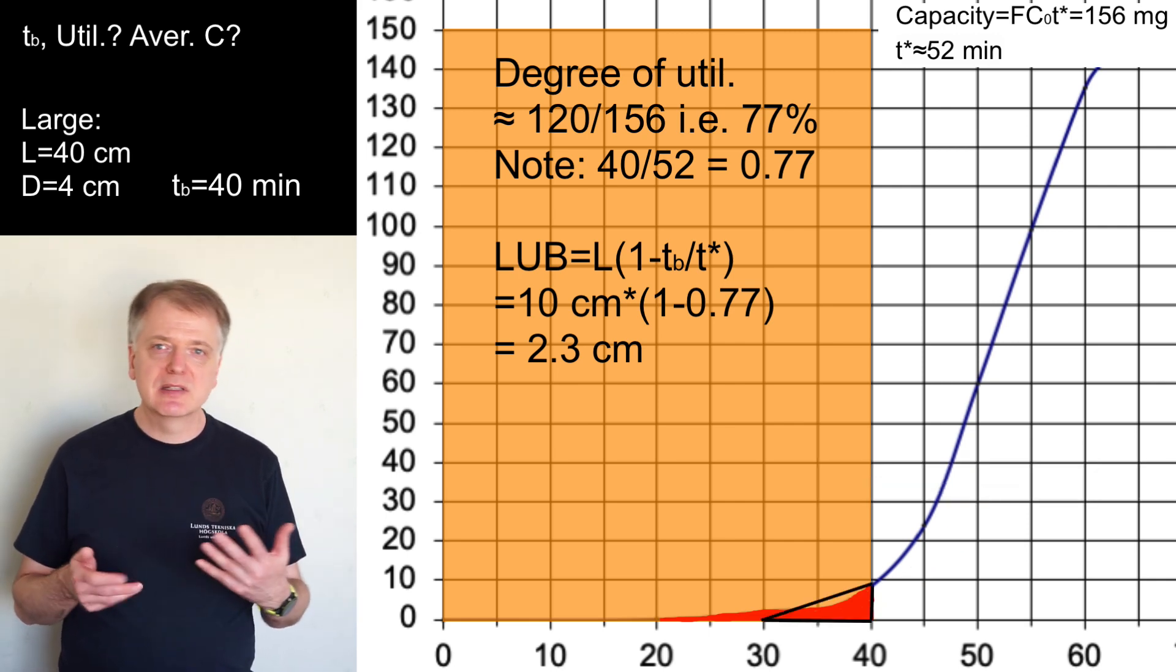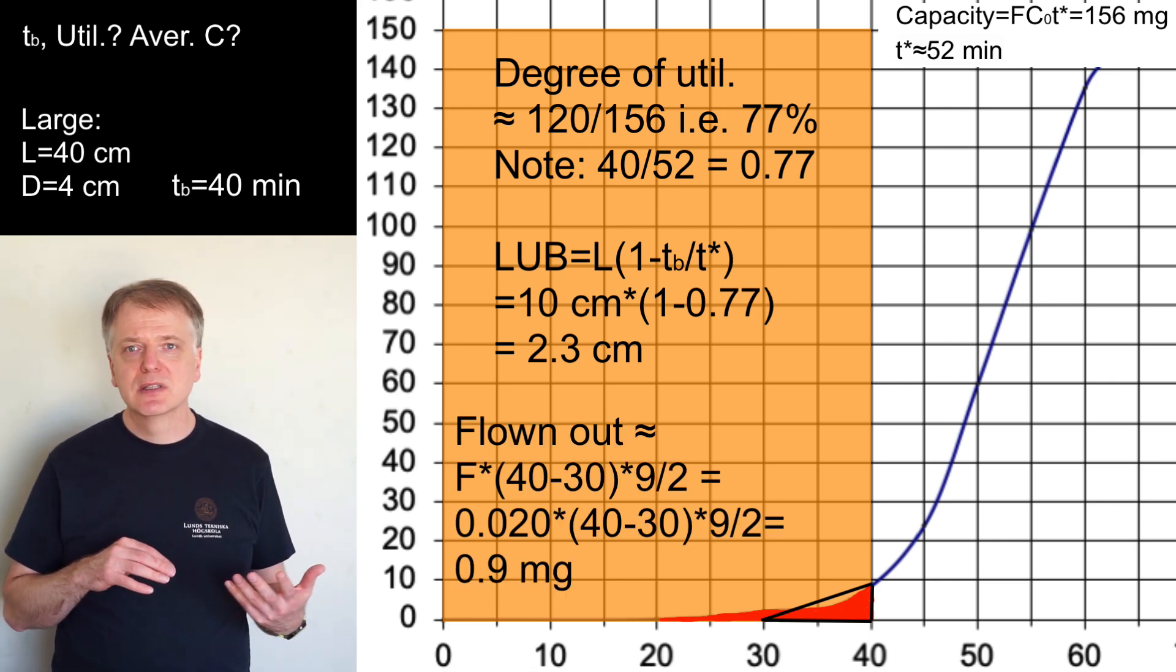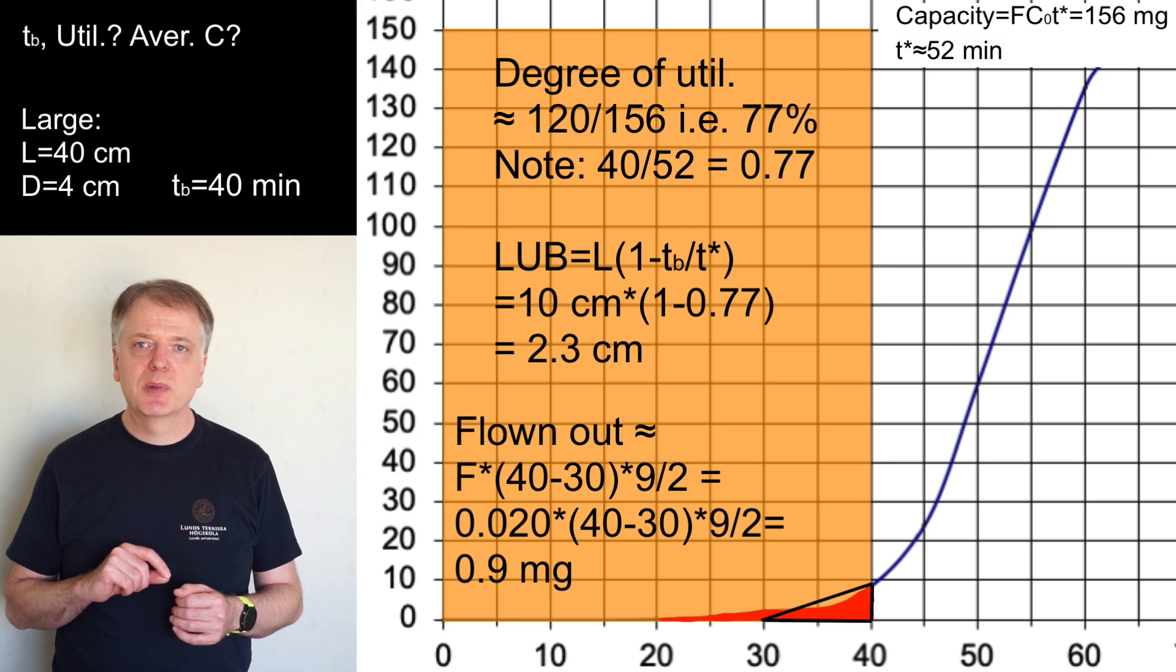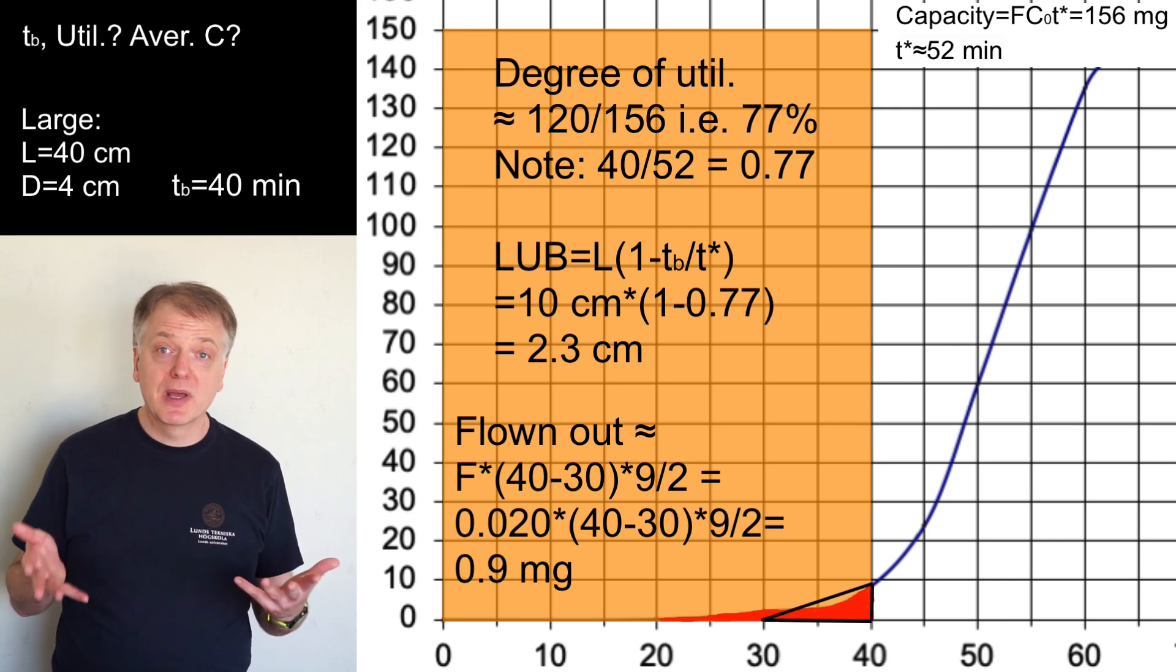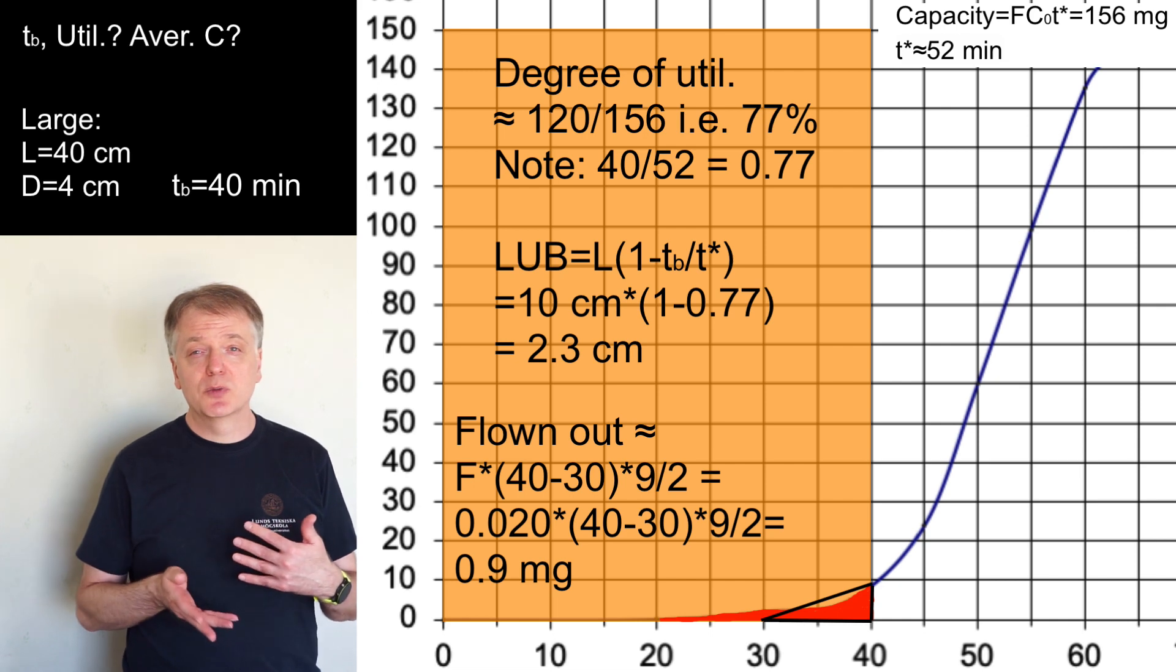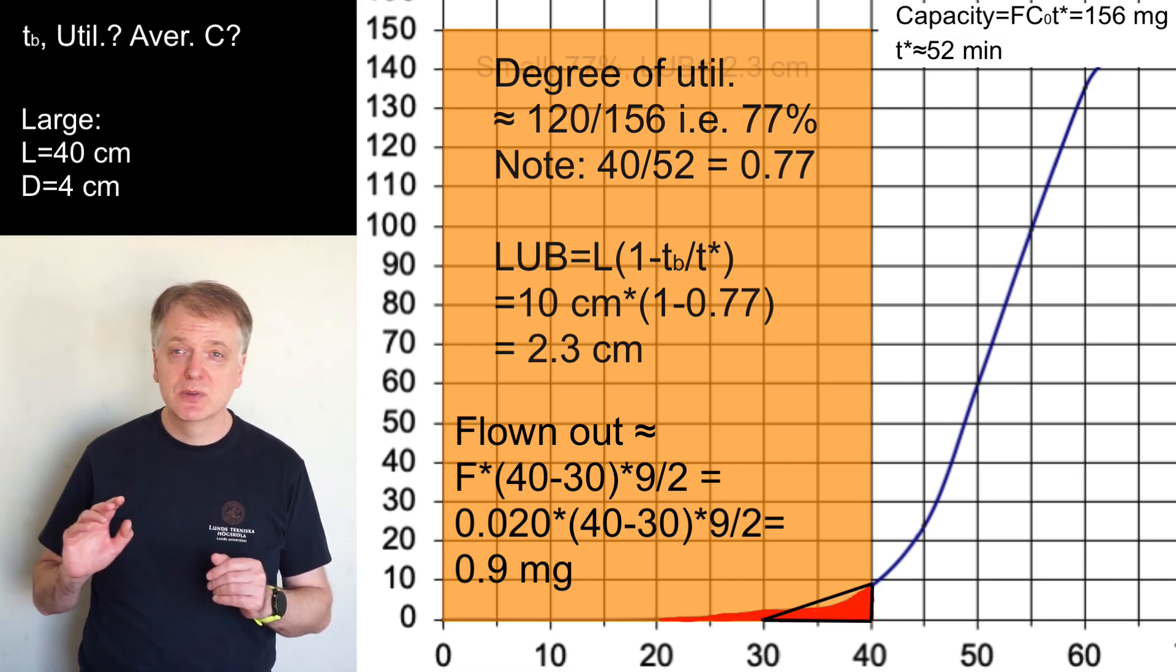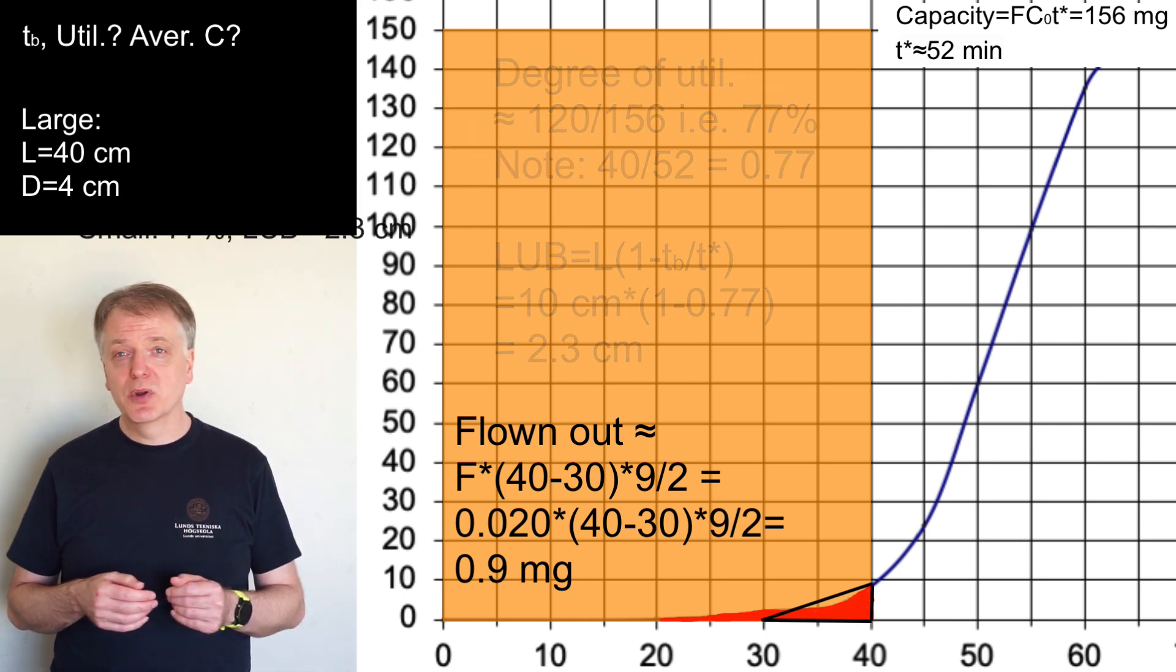That area is approximately the same as a triangle from T equals 30 to T equals 40 minutes with a height 9 milligrams per liter. And we multiply that with the feed flow rate to get the unit milligram. So 20 times 10 to the power minus 3 times 40 minus 30 times 9 divided by 2 which gives us 0.9 milligrams.